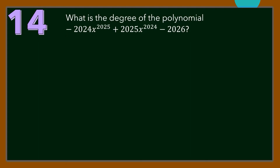Number 14. What is the degree of the polynomial −2024x^2025 + 2025x^2024 − 2026? No solution is needed. By observation, we can say that the degree of the polynomial is 2025, since this is the largest exponent of a variable in the given polynomial.